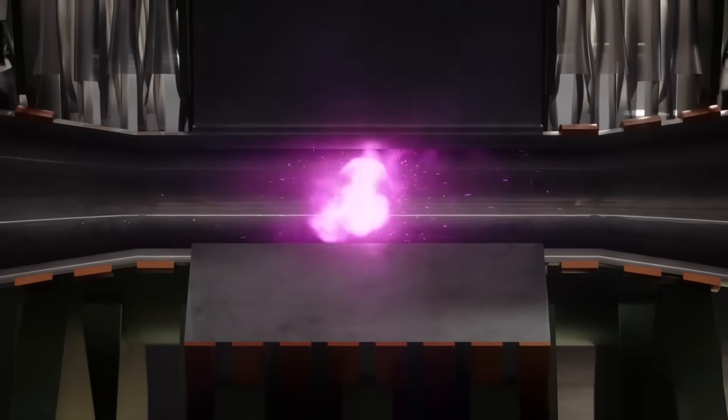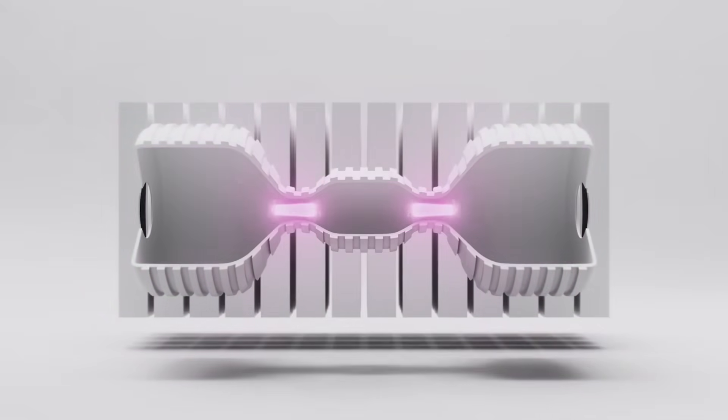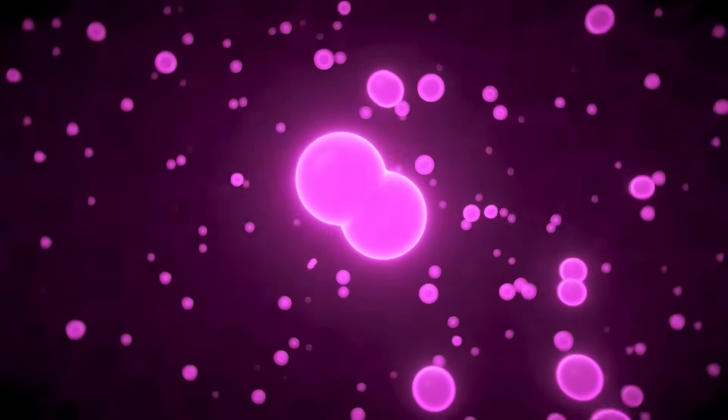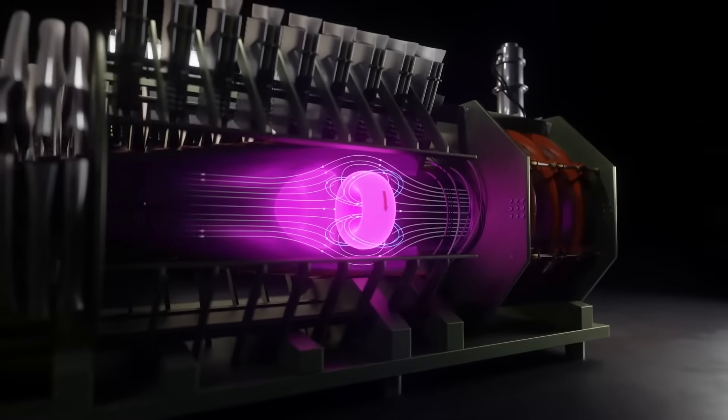Helion goes the other direction. They treat fusion like a repeating shot. The machine fires many times per second or per minute, and each pulse gives back a bit of energy. Add enough pulses together, and you get a power source that can run like an engine.